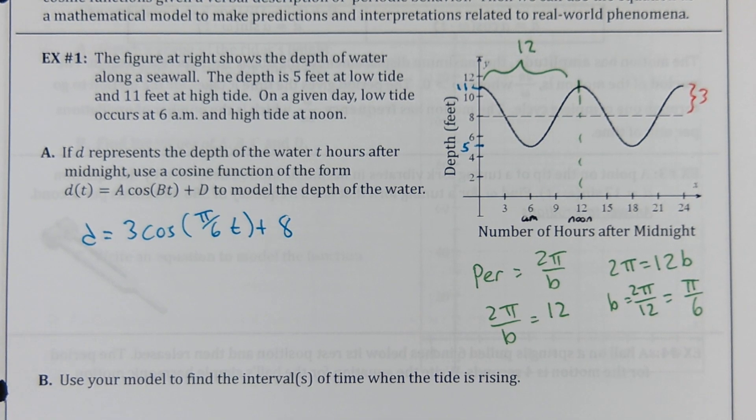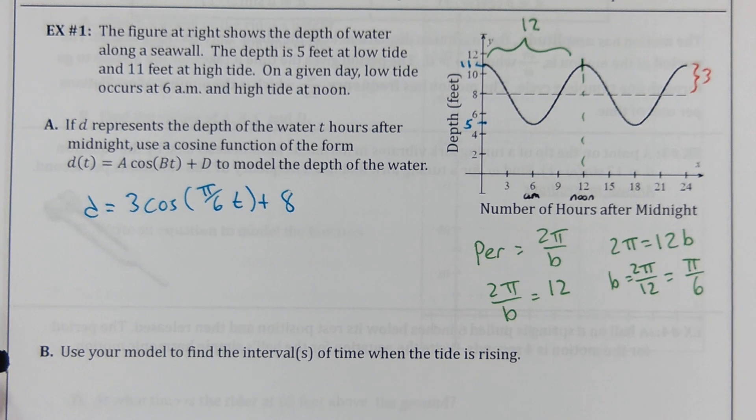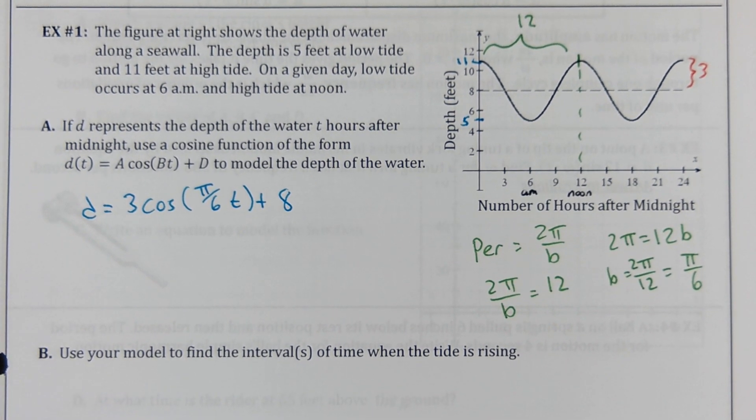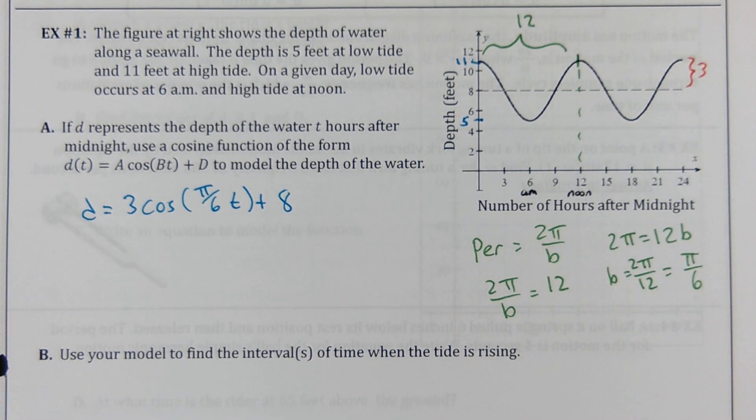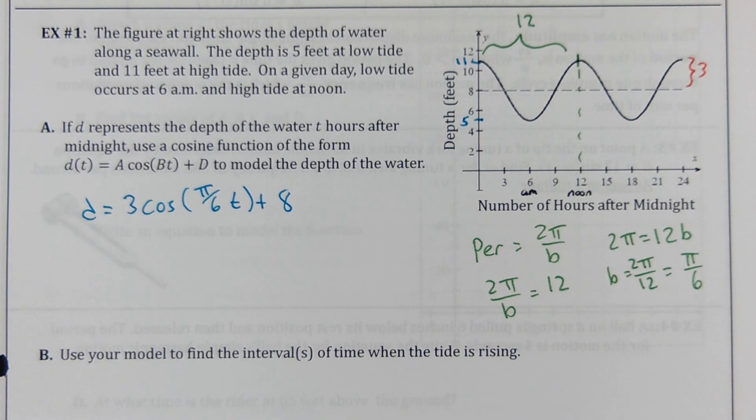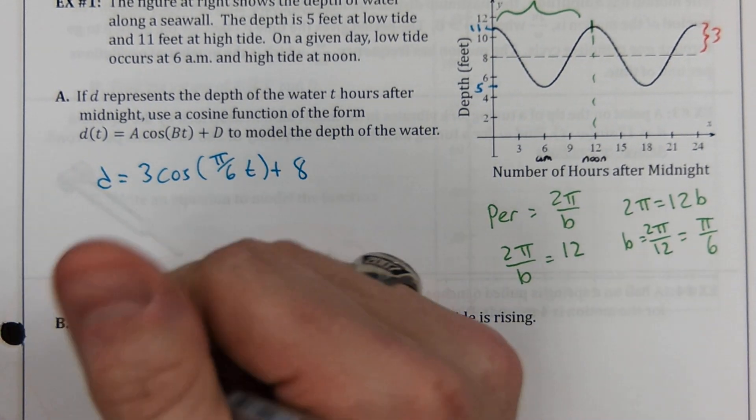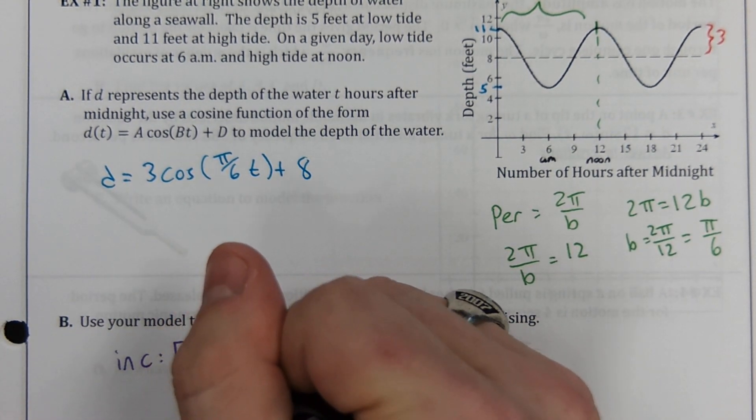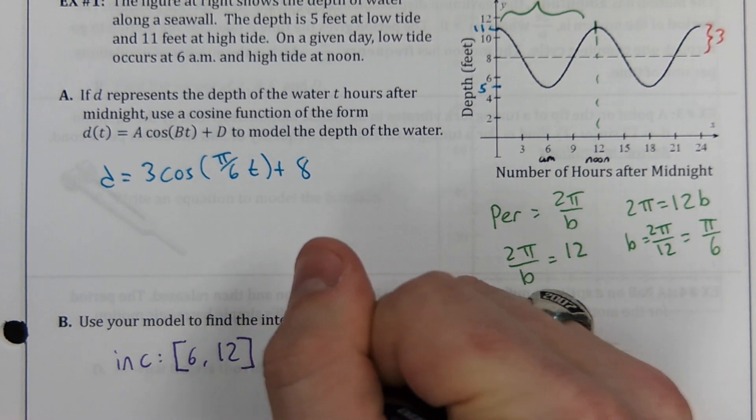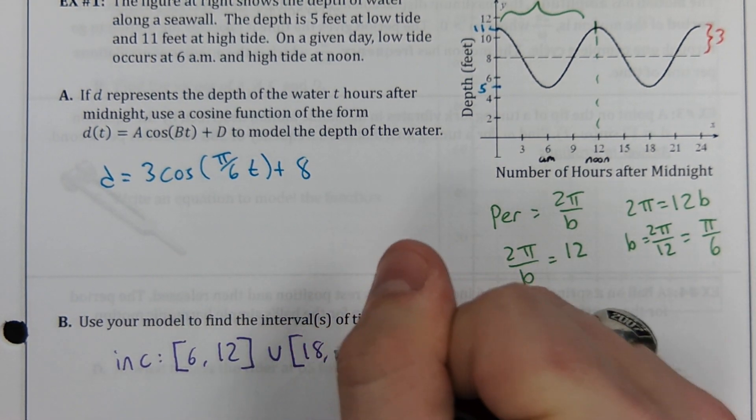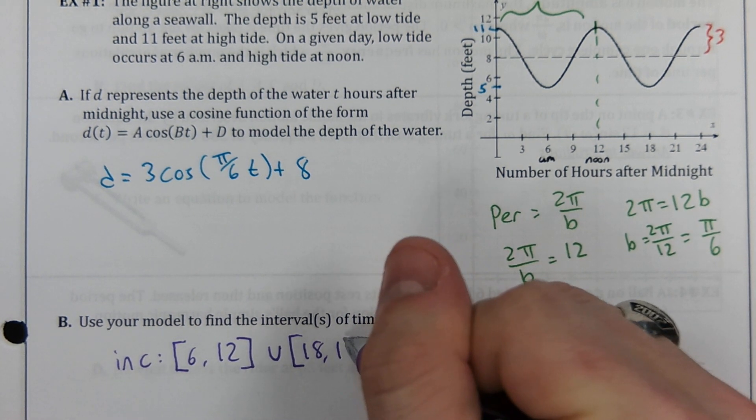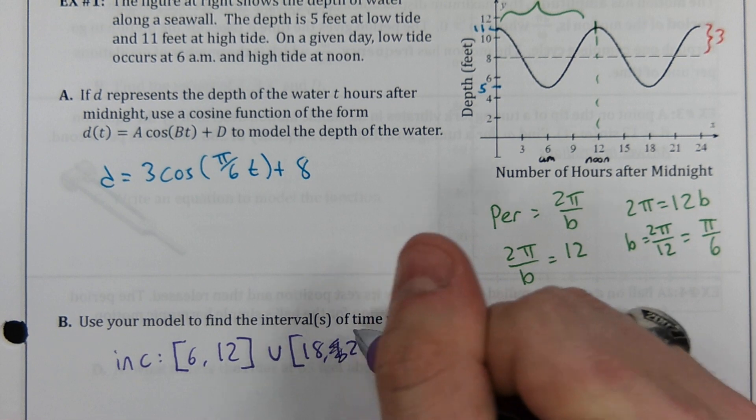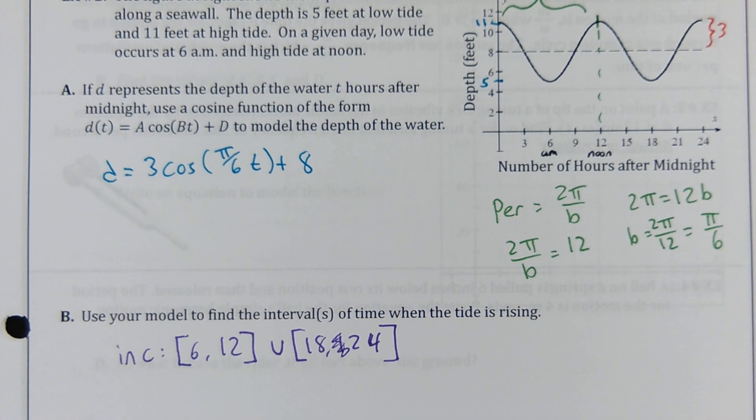I think that was the hardest part. Use your model to find the intervals of time where the tide is rising. Real words, when a tide is rising, what are we looking for on here? Increasing. So we just need to see the zones of increasing on this guy. And when do we start increasing? At 6. Yep. 6 to 12. And where else? 18 to 24 will do it. 18 to 24. I'm not really sure what this is supposed to be, what my brain was doing there. There we go. That's it. Woohoo.